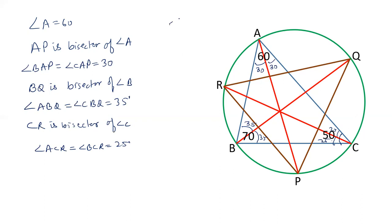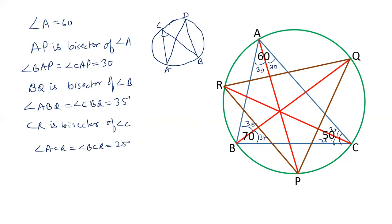We will apply the circle theorem that angles subtended by the same arc are equal. For example, if there are two points and angles ACB and ADB both start and end at the same points and lie on the same arc, then they are equal. Applying this theorem here we can get the values of the angles of triangle PQR.